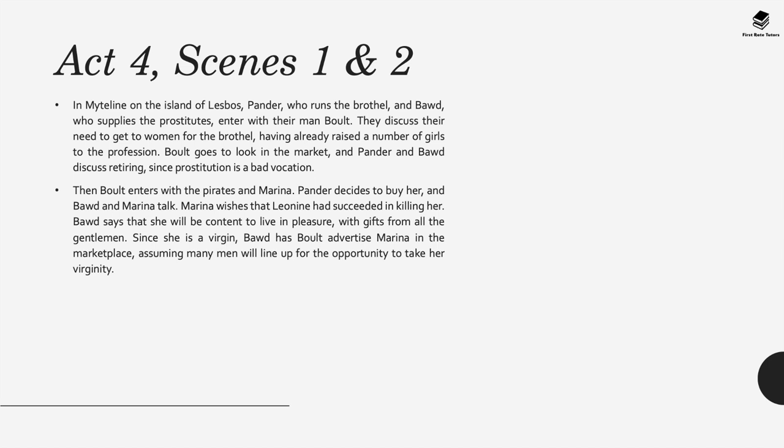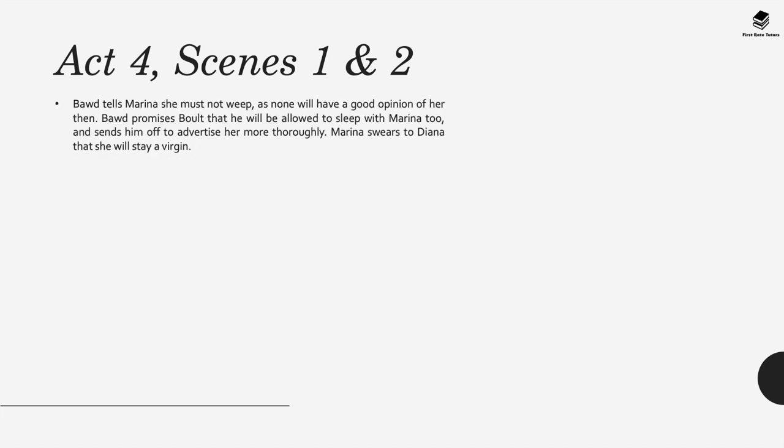In Mytilene, Pander — who runs a brothel — and Bawd — who supplies the prostitutes — enter and discuss the need to get women for the brothel. Bawd goes to the market. Bawd then enters with the pirates and Marina. Pander decides to buy her. Marina wishes that Leonine had succeeded in killing her, but Bawd says she will be content to live in pleasure with gifts from gentlemen. Since she is a virgin, Marina is advertised in the marketplace, assuming many men will line up for the opportunity. Bawd promises Bolt that he will be allowed to sleep with Marina too, and sends him off to advertise her more thoroughly. Marina then swears to Diana that she will stay a virgin.